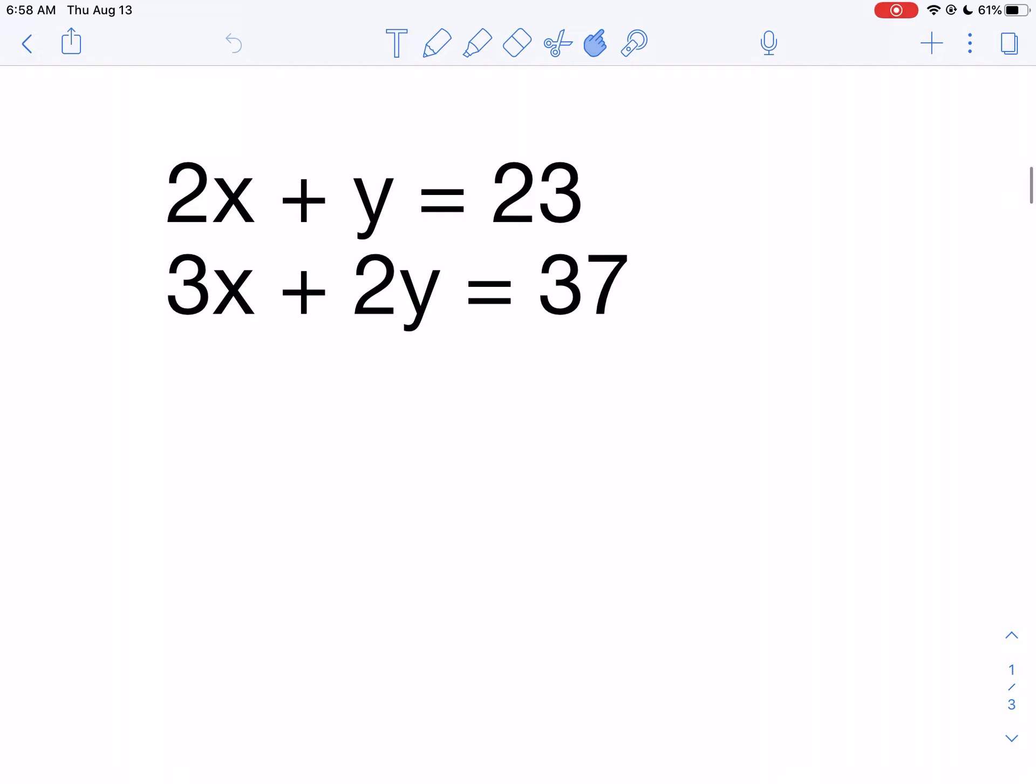So if we look at example one here, 2x plus y equals 23, and 3x plus 2y equals 37. It doesn't matter which variable you get rid of, x or y. I'm going to get rid of y because it seems like it's a lot simpler.